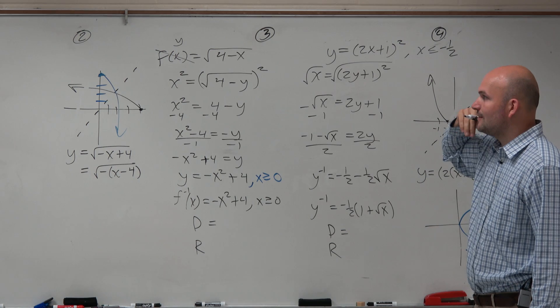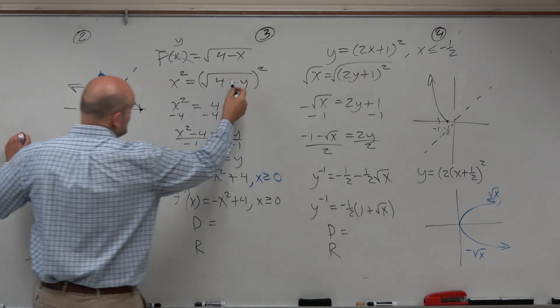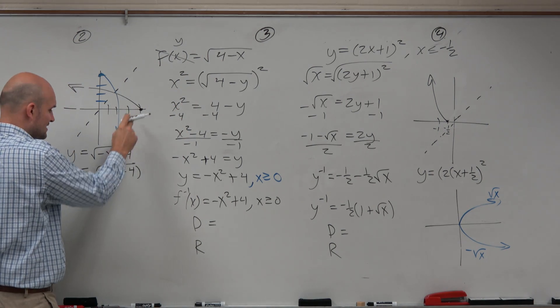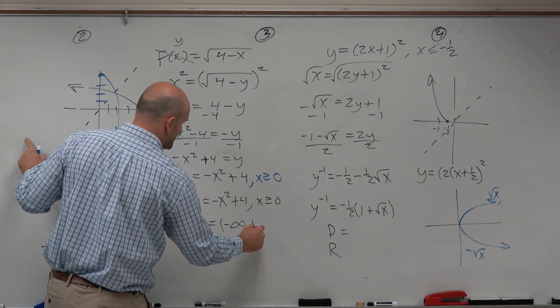Now, you could find the domain by using inequality and graphing it, whatever else. I'm just going to look at this graph, though. I can see that the domain is all real numbers from negative infinity to positive 4.